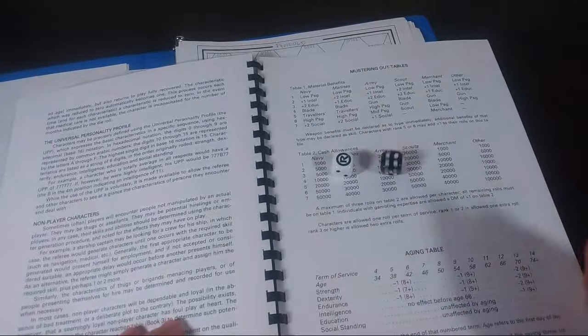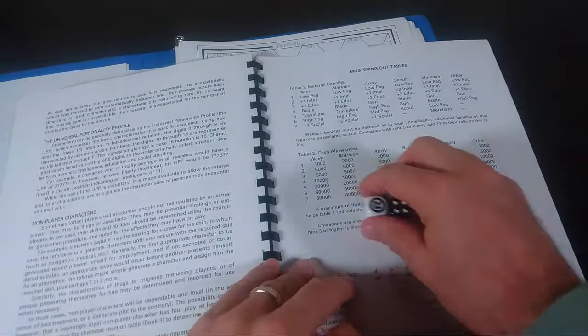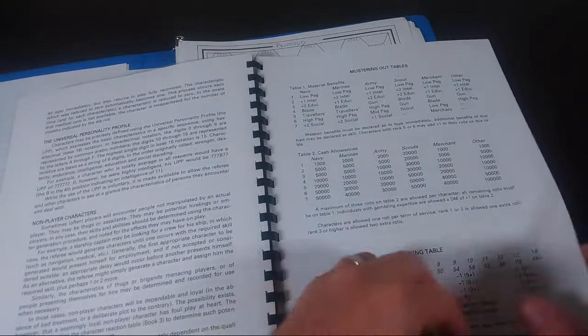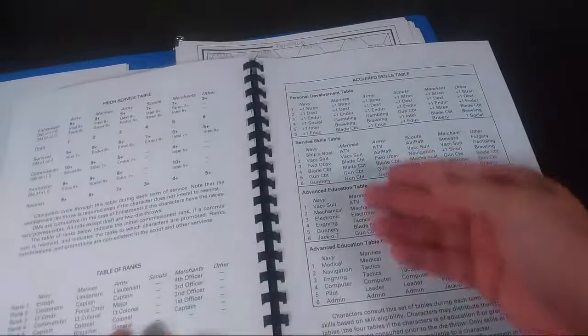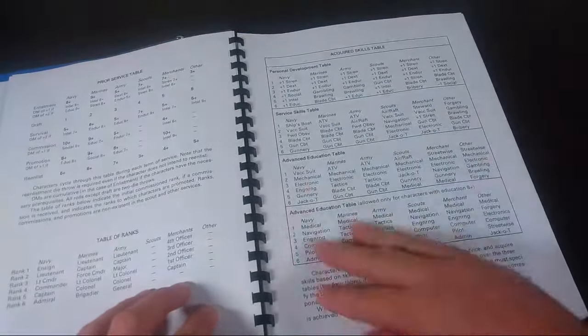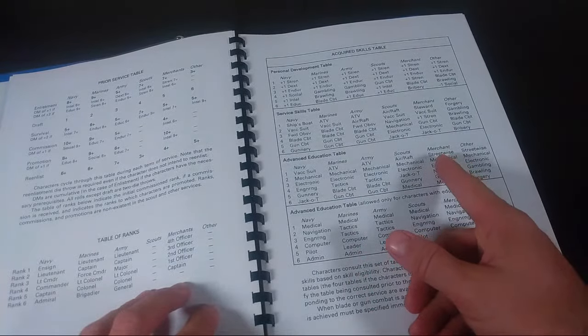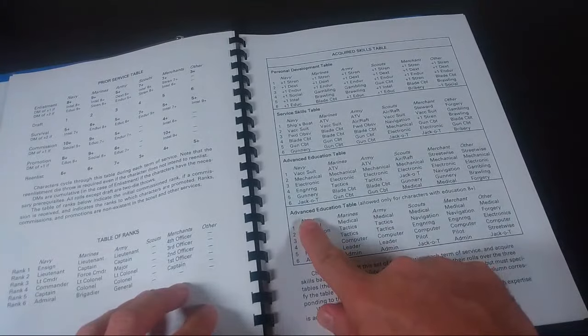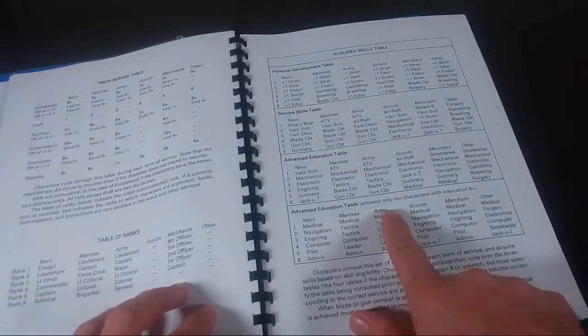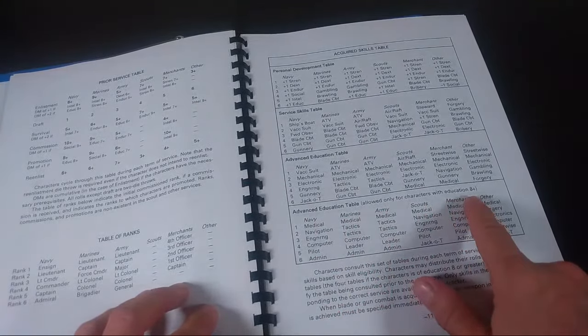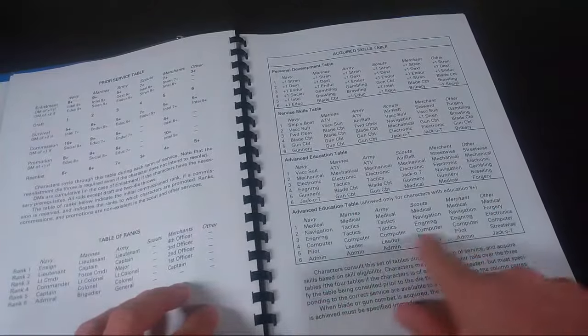I realized that during his first term of service, he earned a commission, which means he should get three skill rolls. I rolled two dice, one on each of these tables. I never got around to the third result, which is good because this gave me time to realize characters with an education of eight or up can roll on the advanced education table.